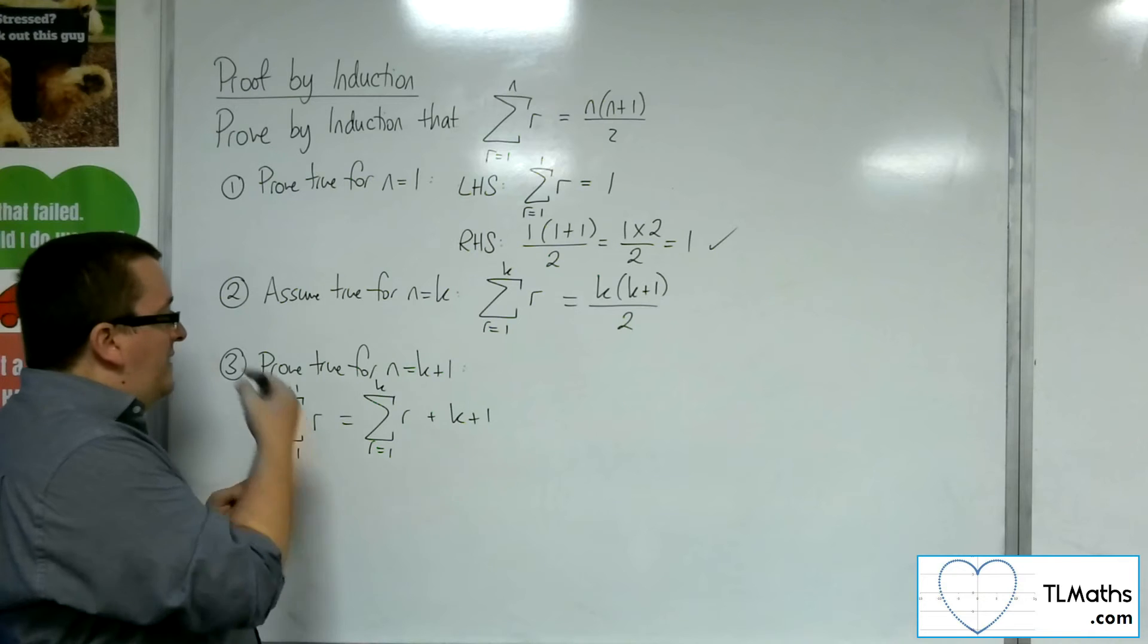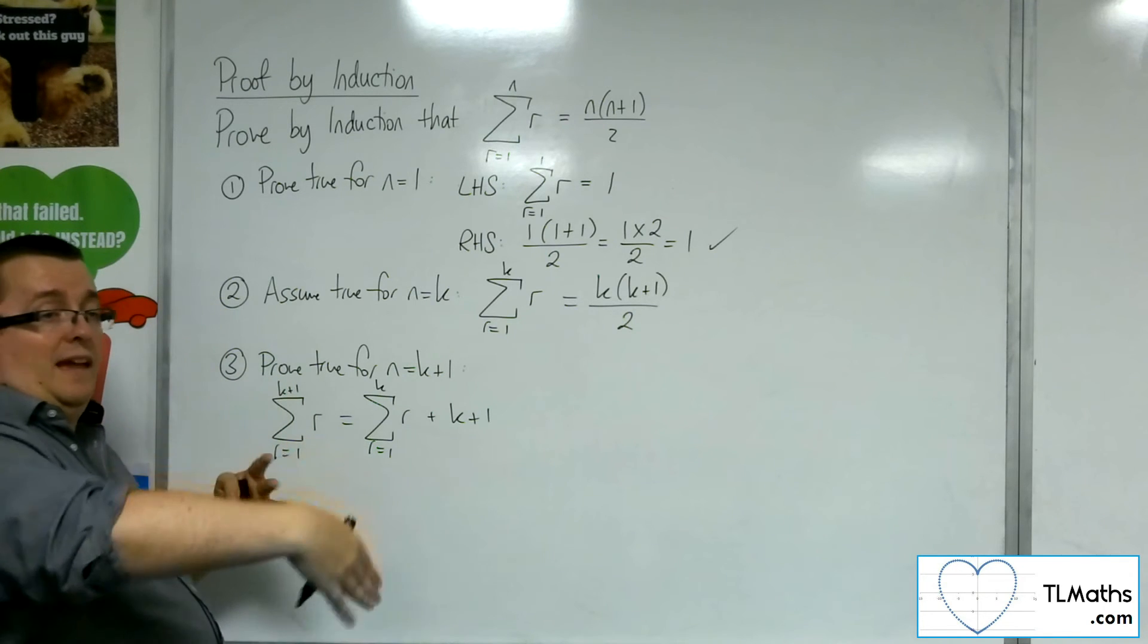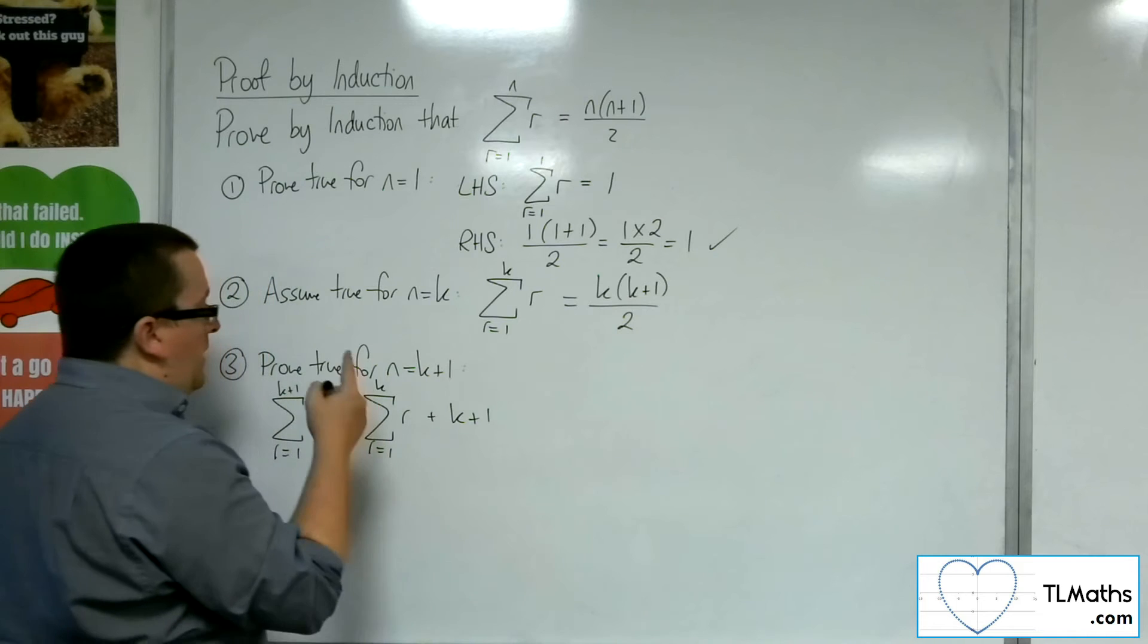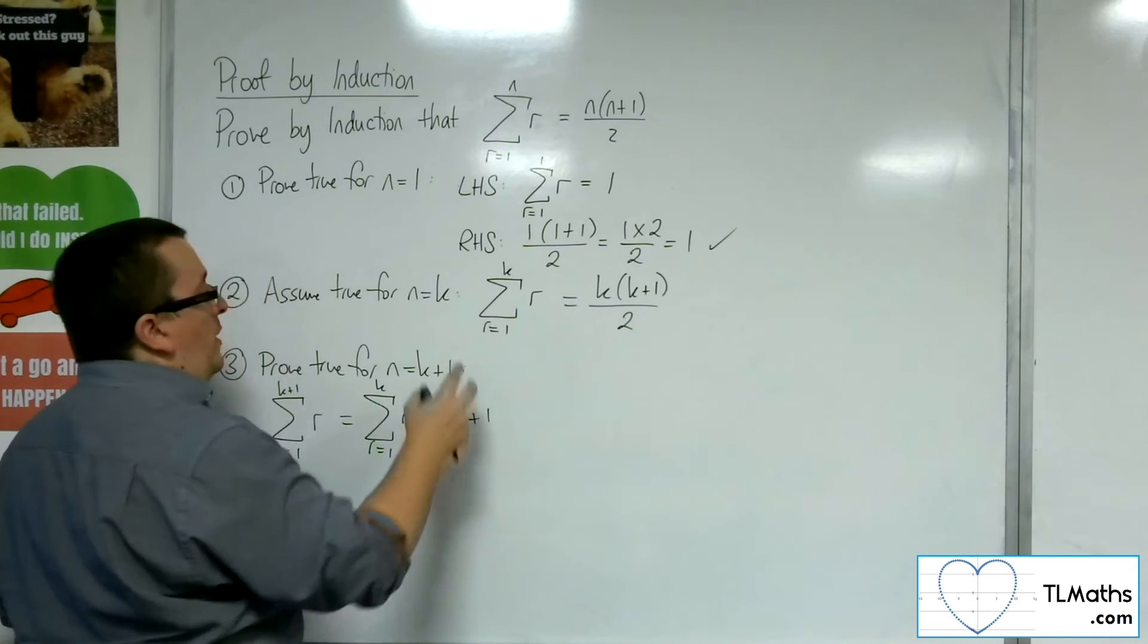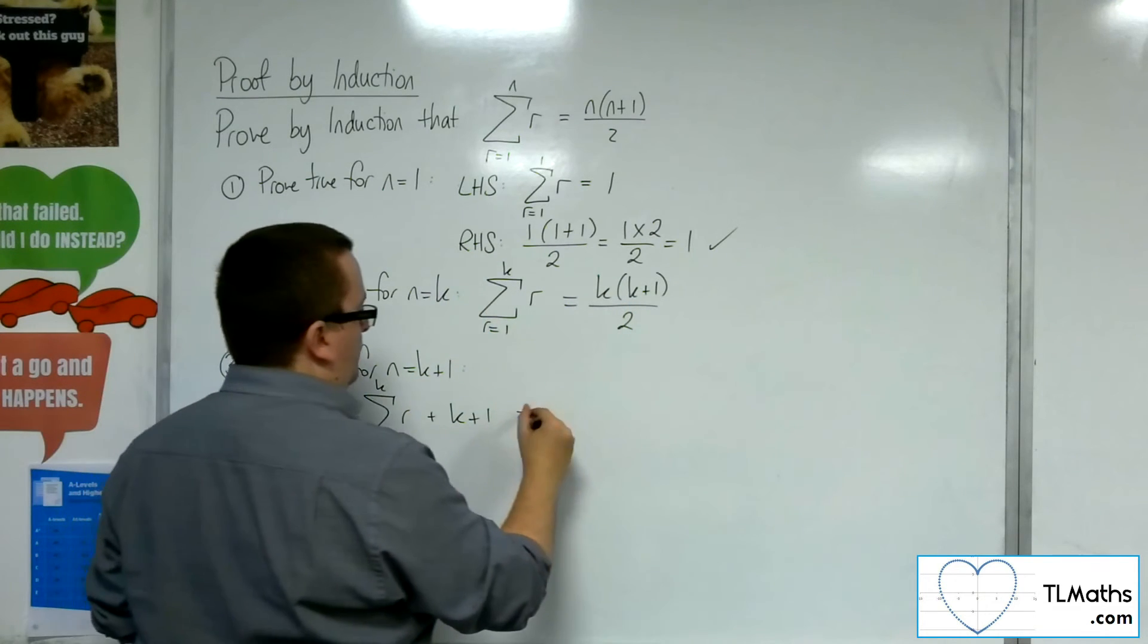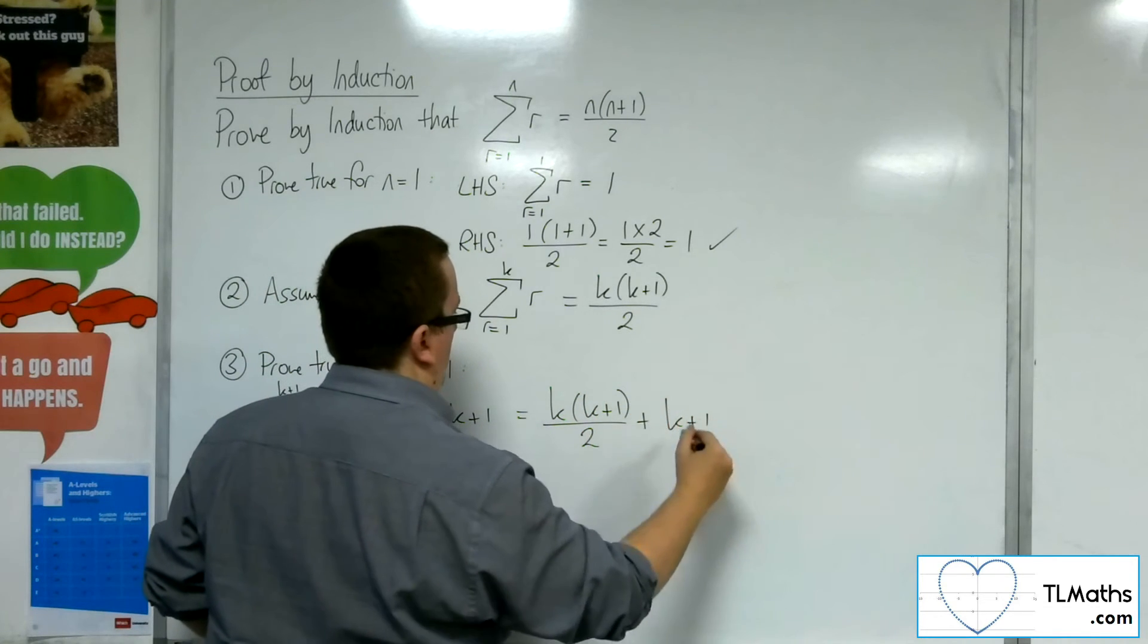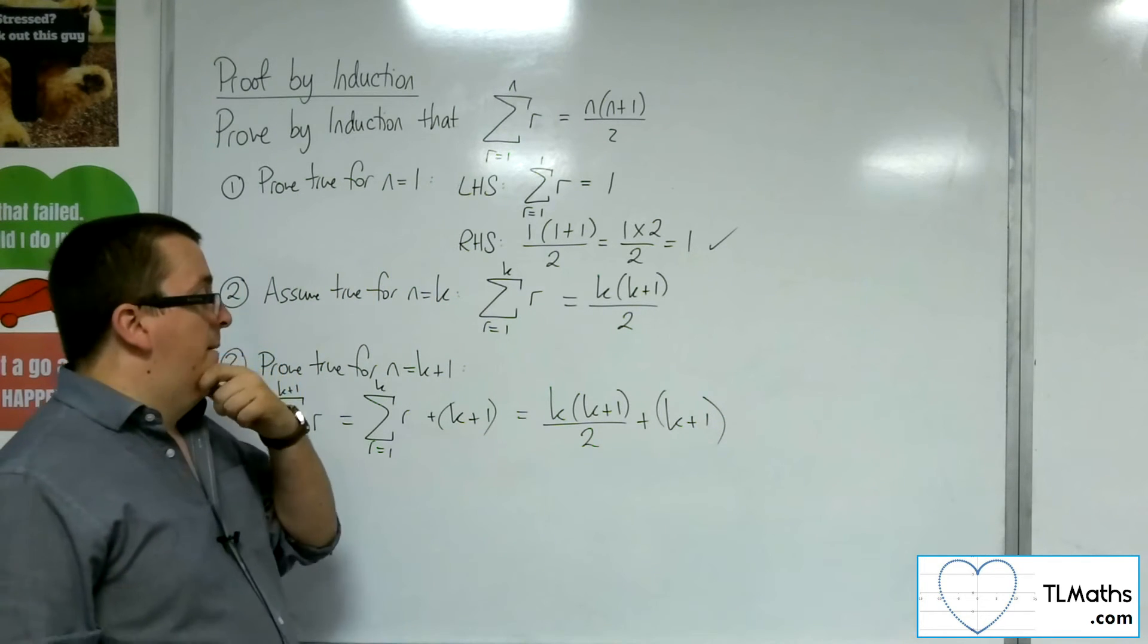So that is what I would arrive at. So this is the same as adding up all the 1 plus 2 plus 3 plus 4 plus 5 plus 6 all the way up to k, and then I've got that k plus 1 on the end. Now I've assumed that this is that. So I can replace that with the k, k plus 1 over 2.